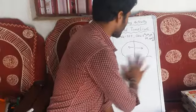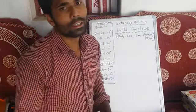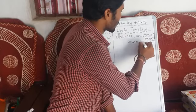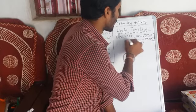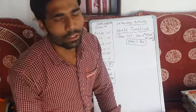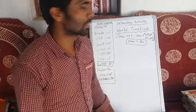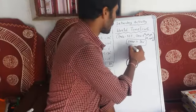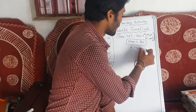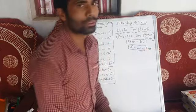In 24 hours, our earth rotates about its axis 360 degrees. So 1 degree rotation takes 4 minutes.